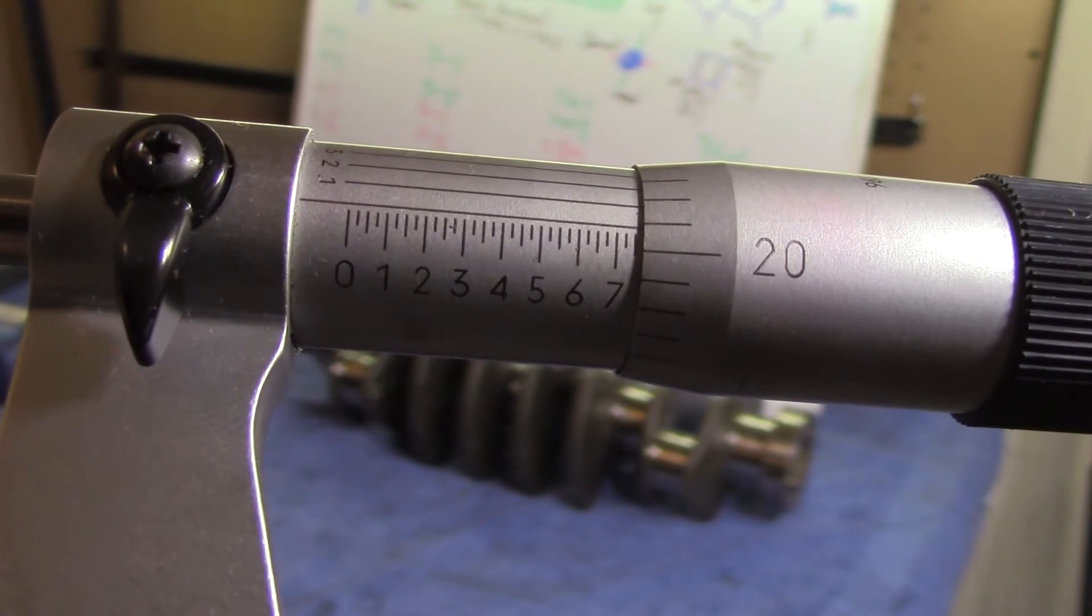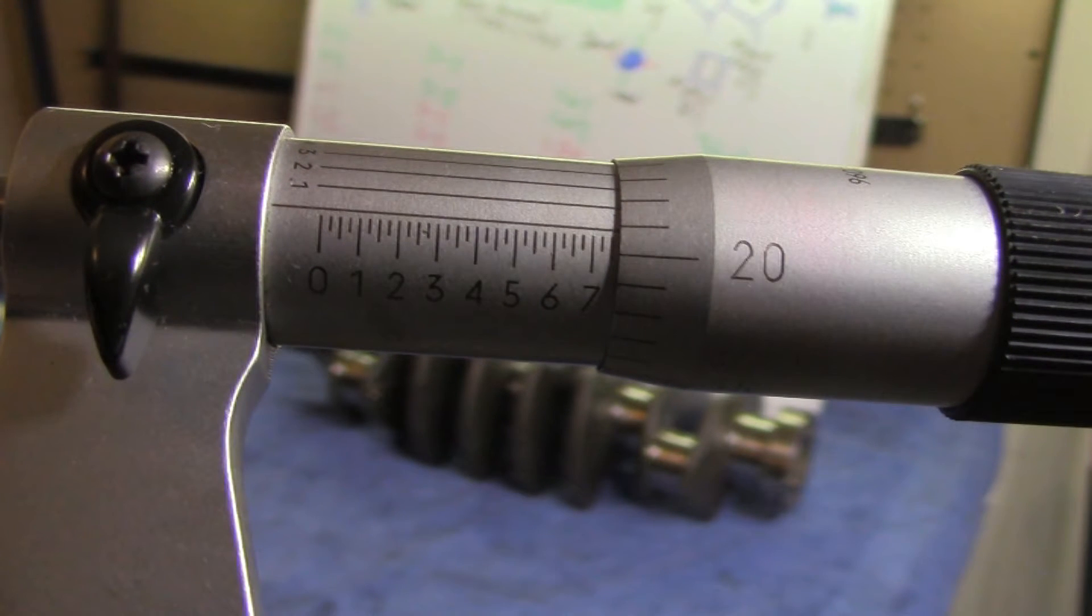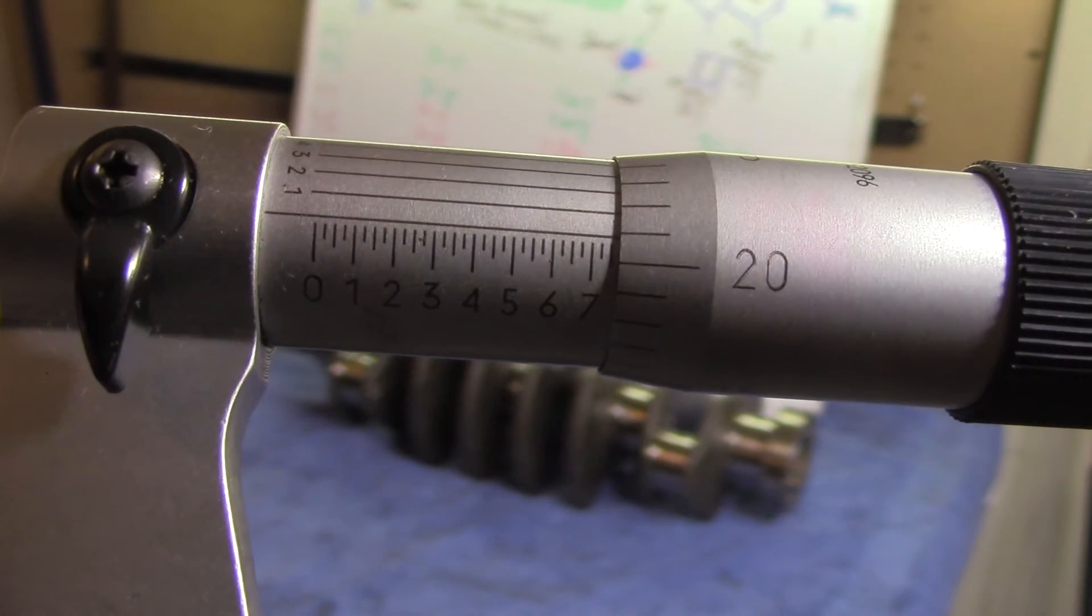Now we move to the sleeve, where you will be comparing the lines with the first horizontal line on the barrel. The number below or equal to this line is added to the total measurement. Twenty is the number just below that first horizontal line, so we will add twenty thousandths to the seven hundred and fifty thousandths to make seven hundred and seventy thousandths.